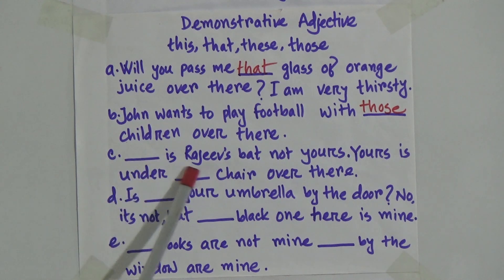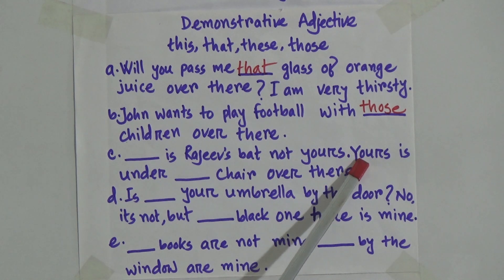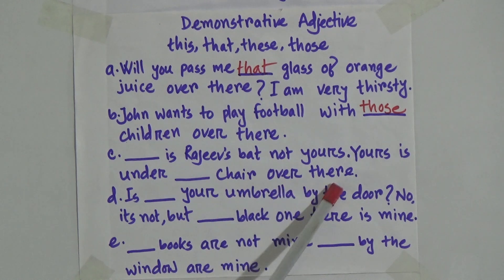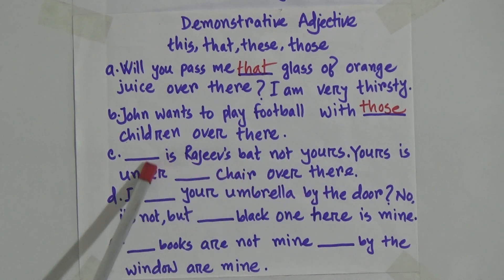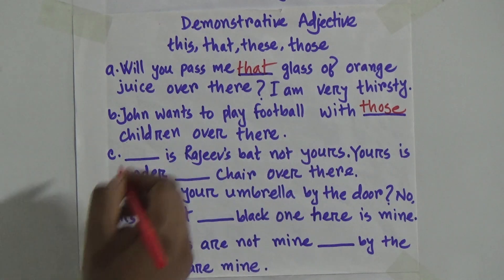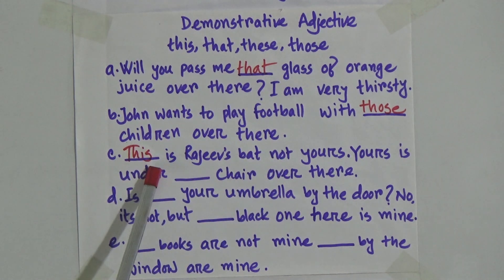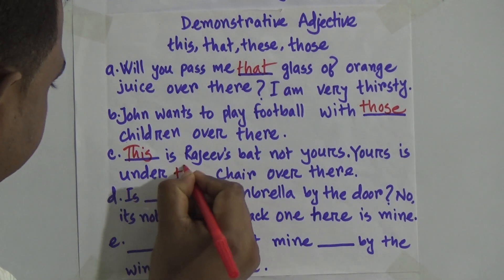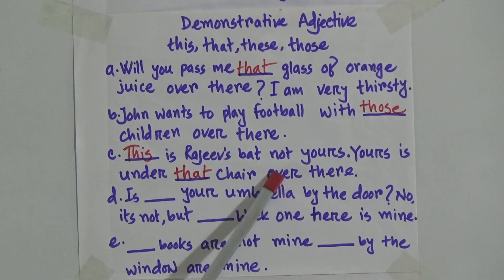Number C: gap is Rajiv's bat, not yours. Okay, then yours is under gap chair over there. Over there means this is not nearby you. So here it would be: this is Rajiv's bat, not yours. And yours is under that chair over there — that chair, because there is written 'over there,' which means it is not near about you.